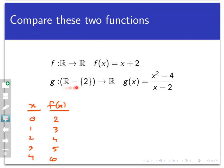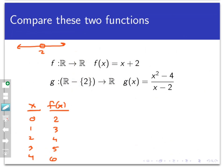Now look at the second function, g. It has a slightly different domain — this is the set of all real numbers except two. So on a real number line, it would look like the whole real number line but with two subtracted out. Every real number except two is in the domain of this function, ℝ minus the set containing two. The co-domain is also the real numbers, just like it was for f. Now let's use that formula straight and make a little table. If I put in zero, I would have zero squared minus four divided by zero minus two, which would be two.